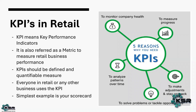Second reason: analyze the pattern over time. When you look at your school scorecard, somewhere you score very good, somewhere you don't. If somebody scored very less in Maths, that means they are a little weak in that subject. Similarly, KPIs will tell you which areas are strong in your business and which areas you need to focus on to keep improving.